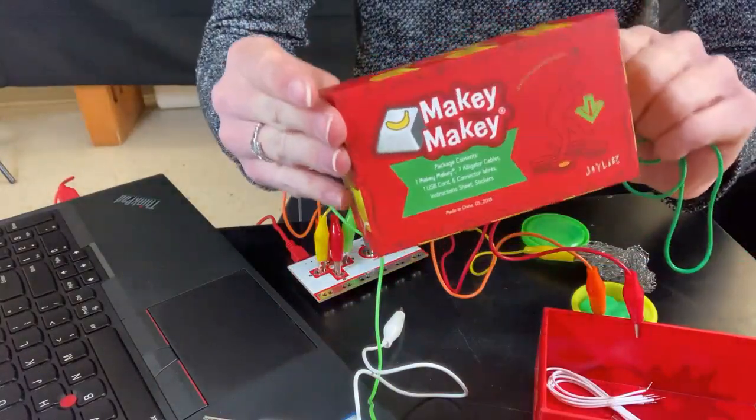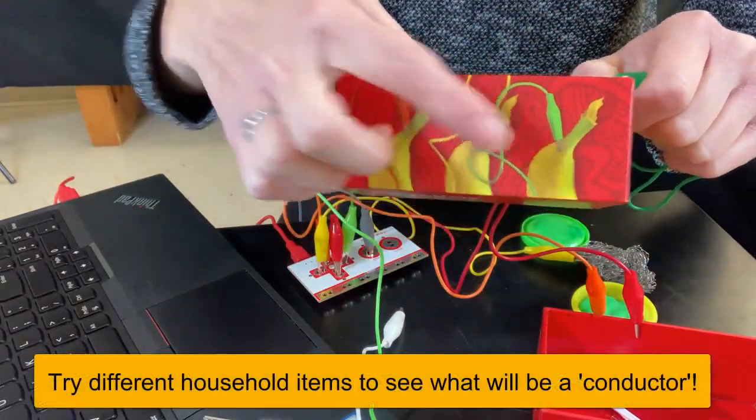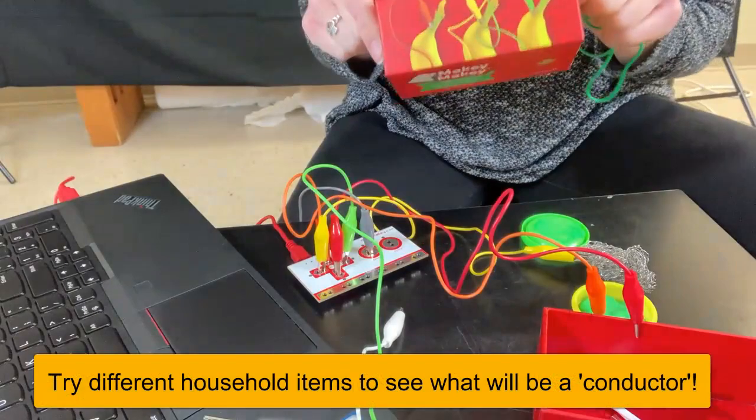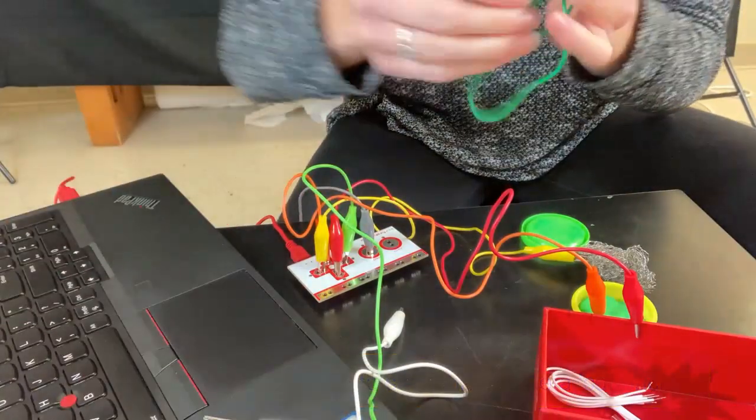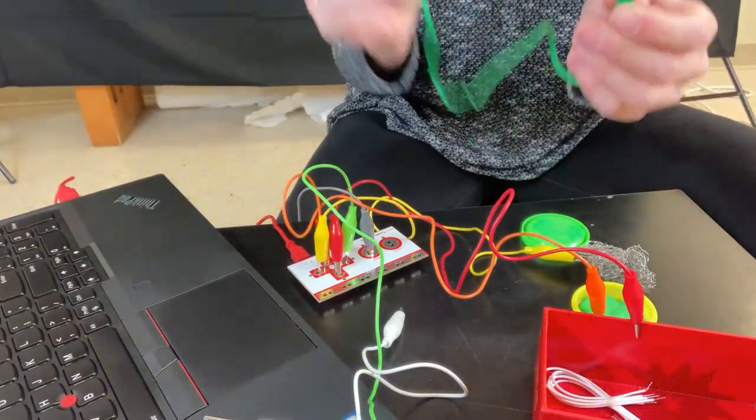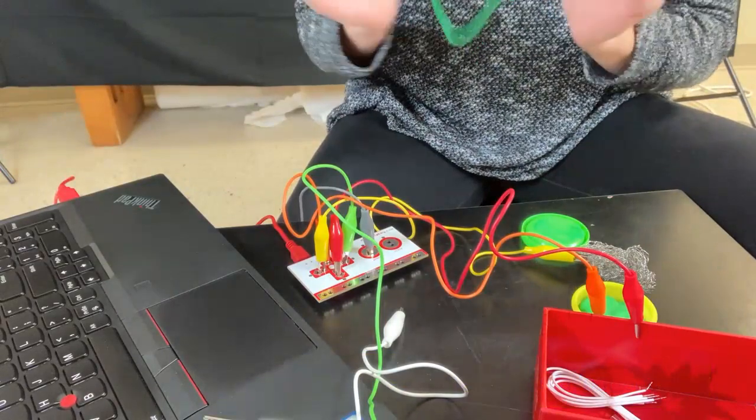I'll give you one hint. On the box here, you can see a banana. That does indeed work as a conductor. So you could attach one end of your alligator clip to a banana, the other end to your game controller. So let's try it out.